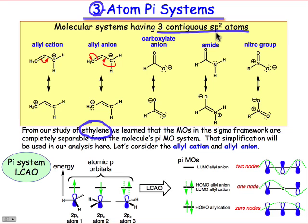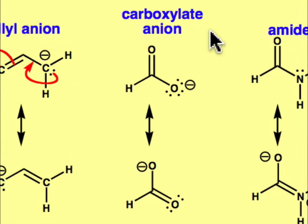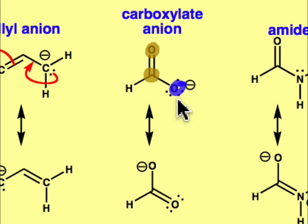Being sp2 hybridized means that they'll have one p orbital left over to contribute to the pi system. Here are several examples of molecules that have three atom pi systems — there are actually many more than this; for example, you might write down the enolate anion. Each of these molecules has three adjacent sp2 hybridized atoms, which at first glance may not be completely obvious. For example, you might want to assign an sp3 configuration to this oxygen atom. However, when you look at the resonance structure — the one at the bottom — you can clearly see that that oxygen can be written as though it's sp2 hybridized, so it too has a p orbital to donate to the pi system.